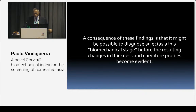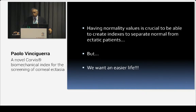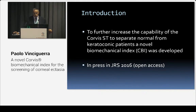If we are able to make a diagnosis of the risk of ectasia at a biomechanical stage, the benefit is clear: we can avoid treating risky patients, or we can start cross-linking risky patients before they have high-order aberrations. Having normality values is very important to create indexes that separate normal from ectatic patients. To further increase the capability to separate normal patients from pathological ones, we developed a Corneal Biomechanical Index — CBI.